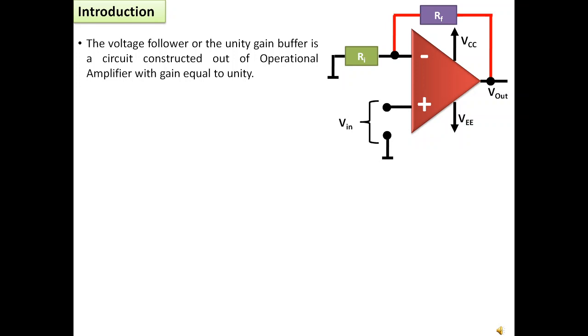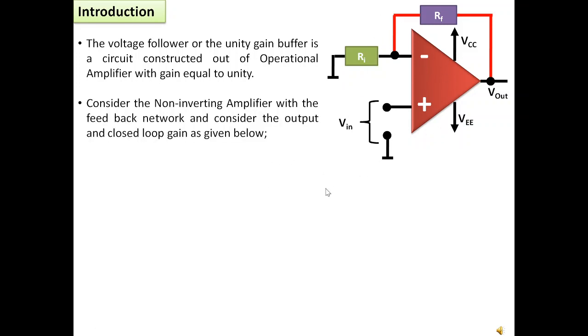Consider the non-inverting amplifier with the feedback network and consider the output and the closed loop gain as given below. Let us consider the closed loop gain of a non-inverting amplifier. From our previous discussions and video tutorials we have seen that the closed loop gain of non-inverting amplifier is 1 plus the ratio of the feedback to the input resistance.